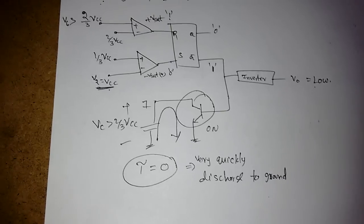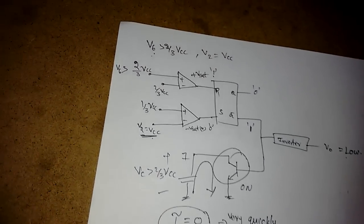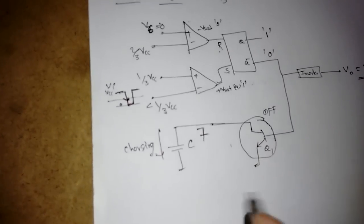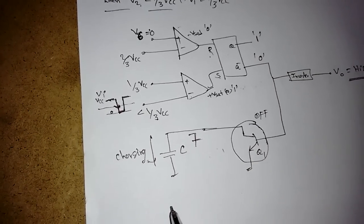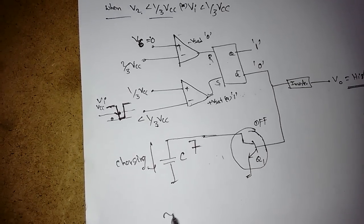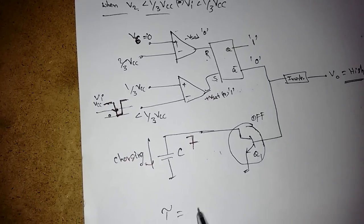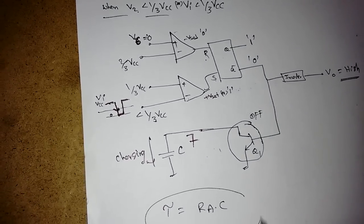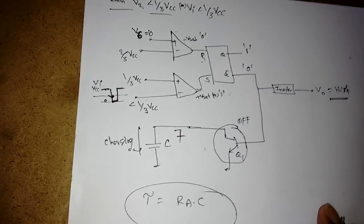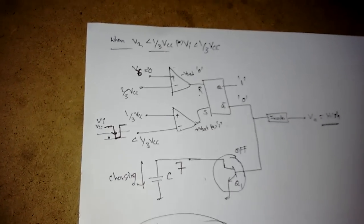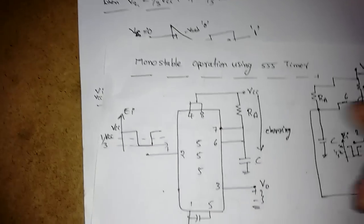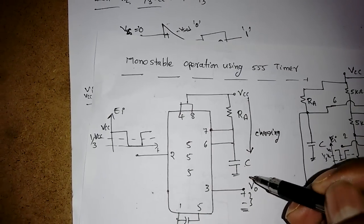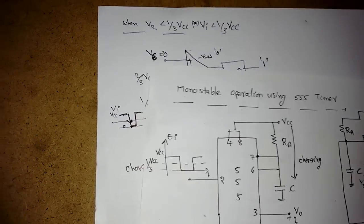In summary: when Vi is less than 1/3 Vcc (trigger pulse applied), the output becomes high. The capacitor charges with time constant Ra × C through the RA path. The moment the capacitor voltage V6 exceeds 2/3 Vcc, the output becomes low and the capacitor discharges. Since there is no resistance in the discharge path, the discharge time constant is 0 and it discharges very quickly to ground. The charging path is Ra and C, with time constant Ra × C.